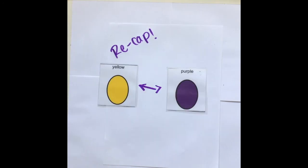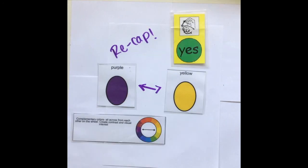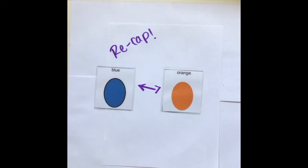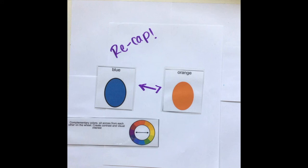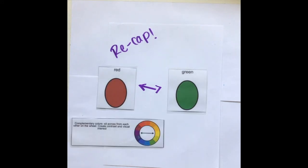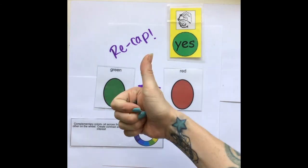One more recap. So yellow and purple yes are complimentary. So are purple and yellow. It's the same thing. Blue and orange or orange and blue are also complimentary no matter which way you say it. And finally green and red or red and green are also complimentary colors.